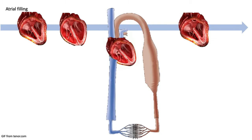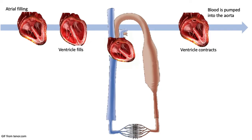Atrium fills with blood. The ventricle then fills with blood. Then the ventricle pumps the blood. Then blood is pumped into the aorta.